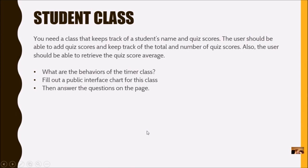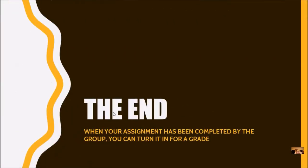Let's do one more example. This is for a student class. Here's your problem statement. You need a class that keeps track of a student's name and quiz scores. The user should be able to add quiz scores and keep track of the total number of quiz scores. Also, the user should be able to retrieve the quiz score average. So what are the behaviors of this student class? What do you think this object would need it to do? Now, when it says keep track of all the quiz scores, you can do that in a list. Or you don't really have to keep track of them. But the thing is you don't have to decide that right now. All you have to do is decide on which kind of methods do you think. Not how I would actually program it, but what are the methods that somebody would program. So you're going to fill out a similar public interface chart for this. Determining what the behaviors are. And then you're going to answer a few questions on the page. So work together with this as your group. Once you have everything finished, and you have several parts to this assignment, and you need to complete them all together as a group, then you can turn it in for a grade.